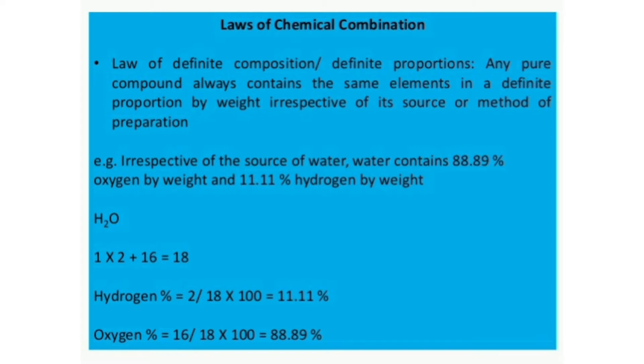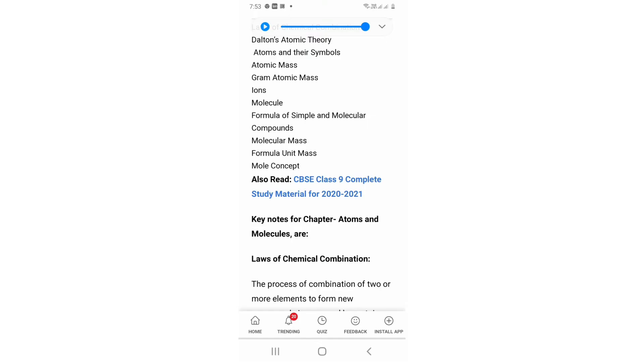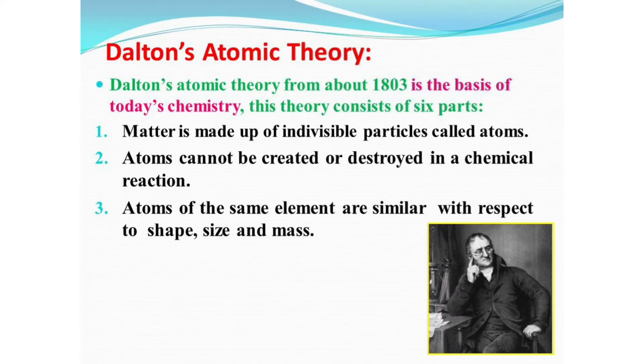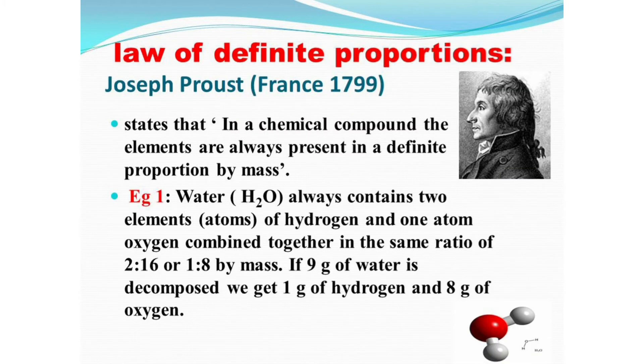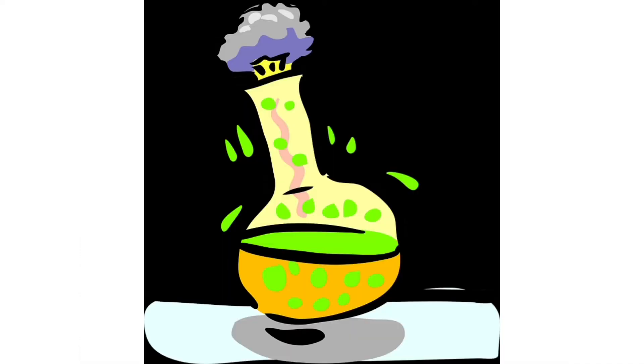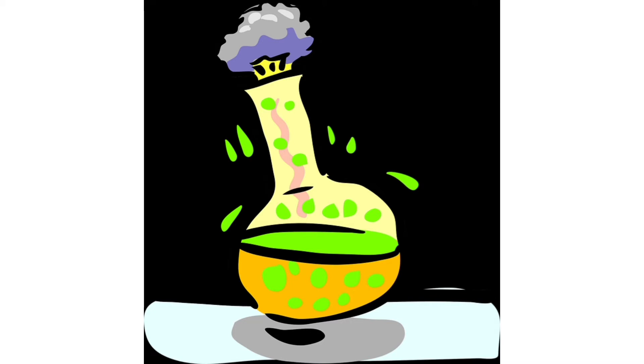First of all, they have laws of chemical combination to provide us. What is the law of chemical combination? There are three important laws of chemical combination: law of conservation of mass or matter, second one is law of constant proportion, and third is law of multiple proportion.